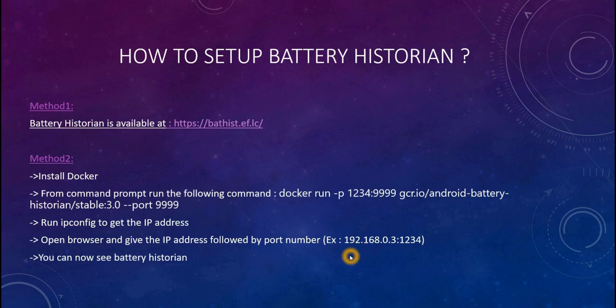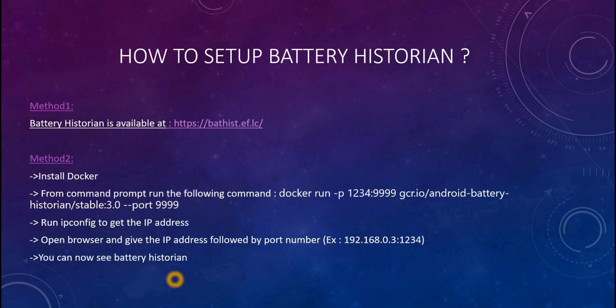Once you have your IP address, open the browser and enter the IP address followed by a colon and the port number 1234 — for example, your IP address colon 1234. Now you can see Battery Historian. Browse to select the bug report file, click the submit button, and the HTML report view of Battery Historian will be generated. I will show you a demo of how it looks.